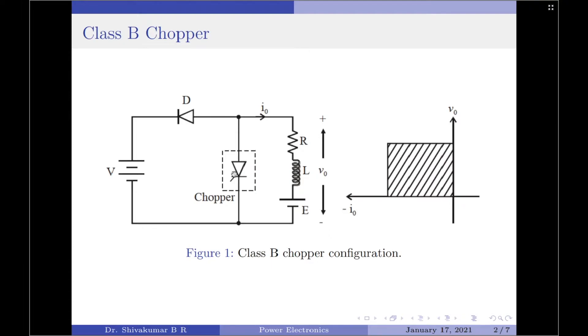In type B or second quadrant chopper, the load must always contain a DC source. In the circuit shown here, E represents the DC source. When the chopper switch is closed, the load gets disconnected from the supply due to the presence of the diode D in series with the supply. Therefore, the output voltage is zero, that is V0 equals 0.